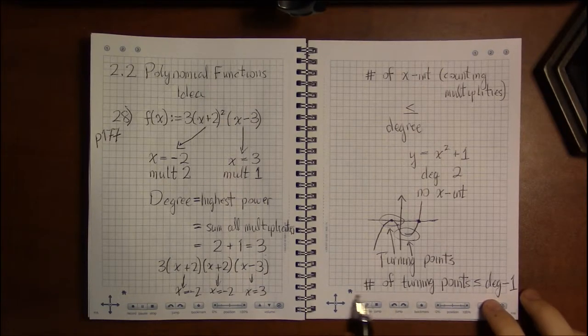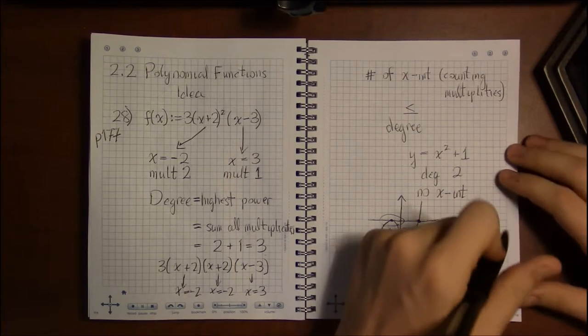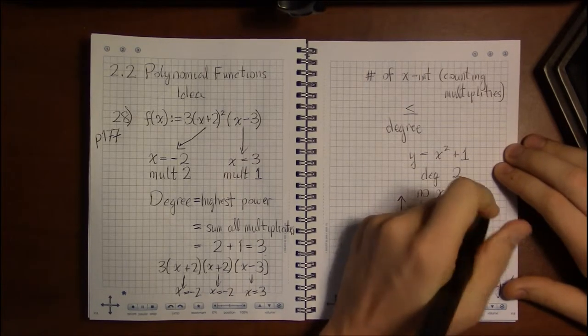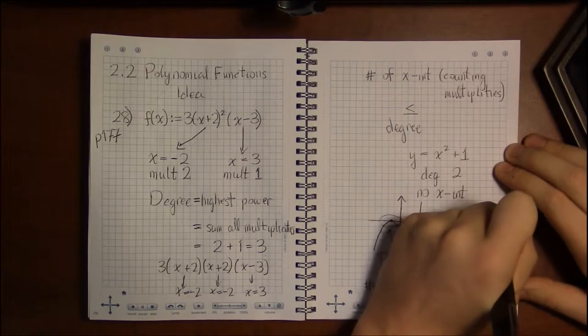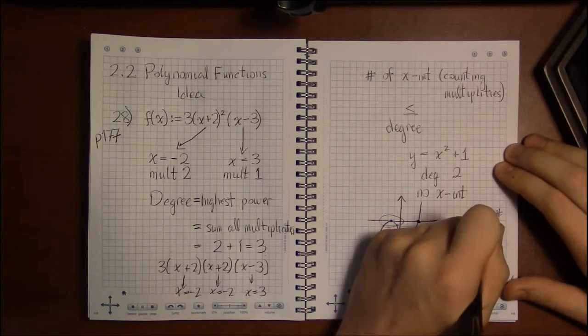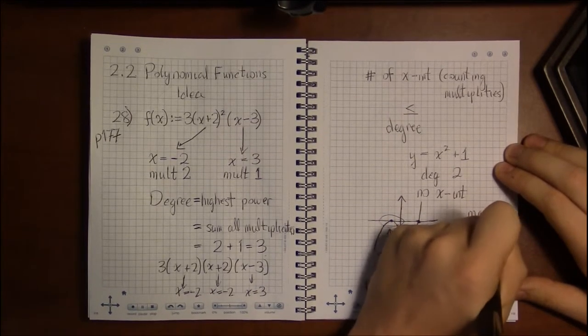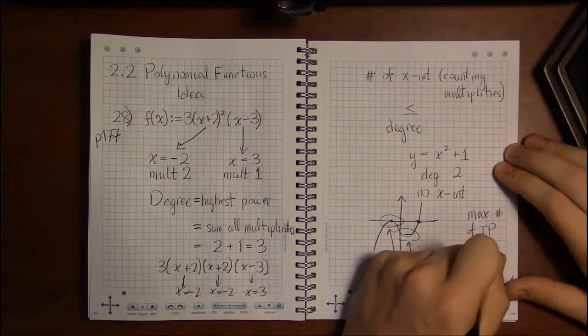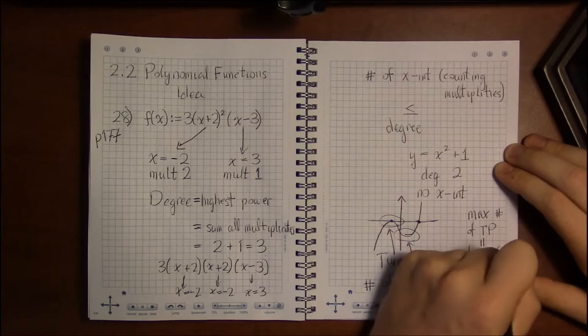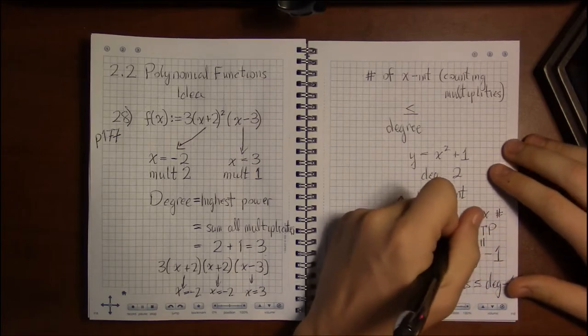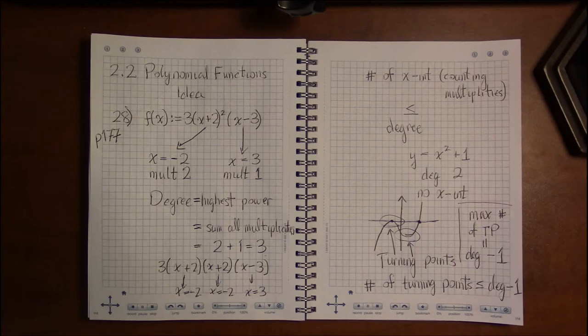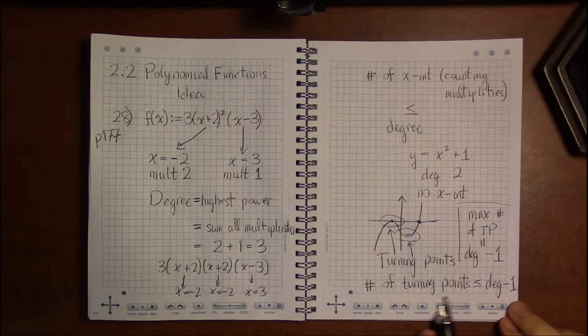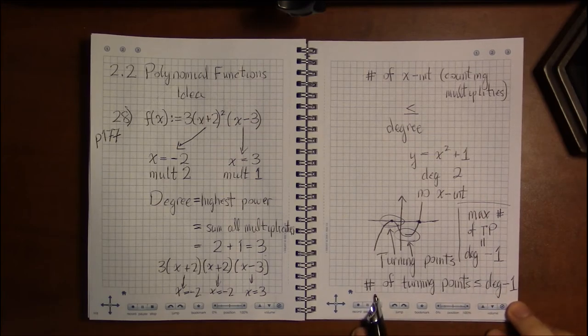So another way to write this is to say that the maximum number of turning points is equal to the degree of the polynomial minus one. That's another way of stating this inequality.